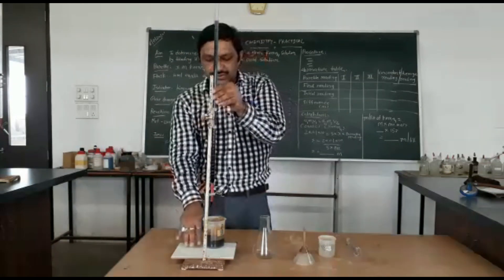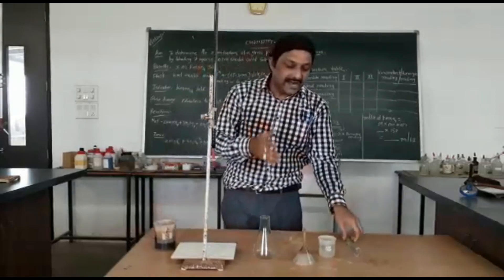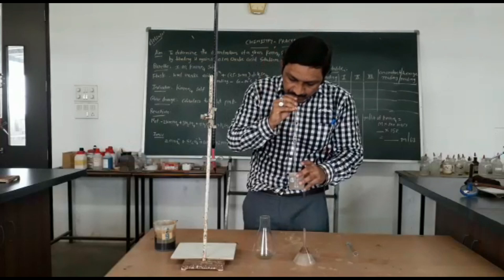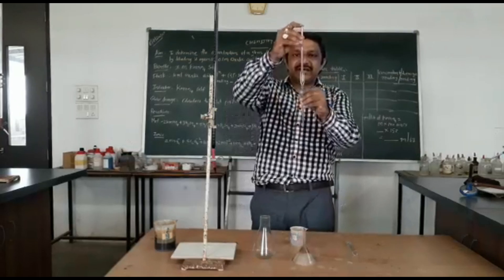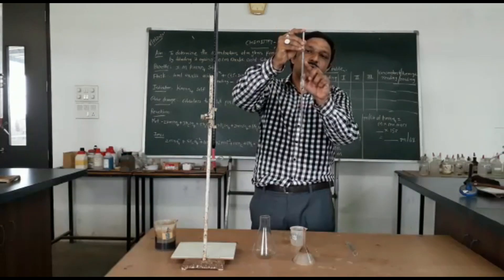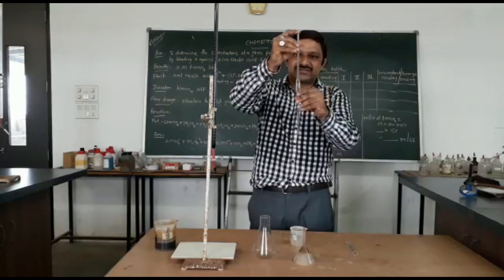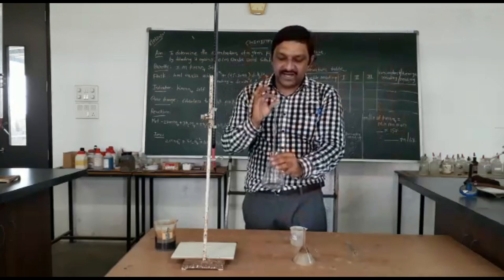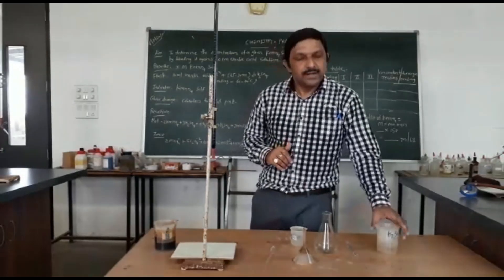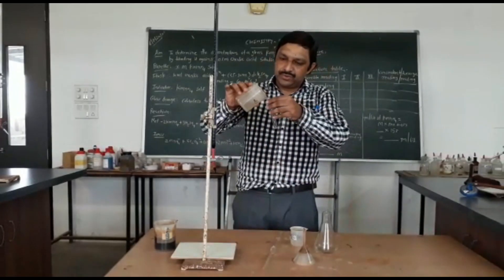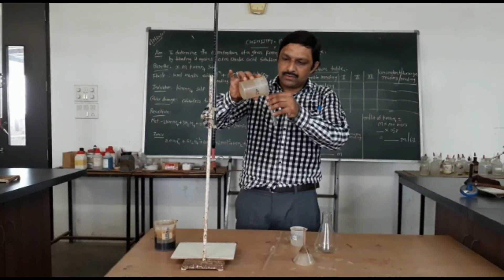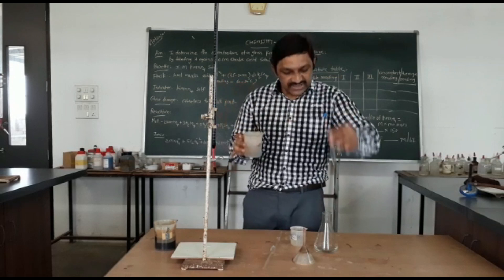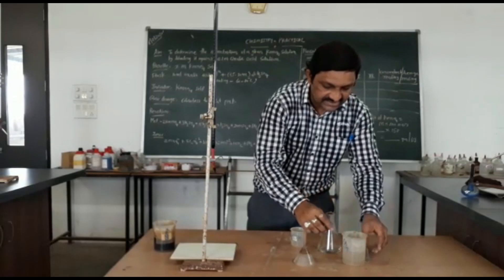Now add 10 ml of oxalic acid solution into your conical flask using a pipette. Take the lower meniscus reading since oxalic acid is a colorless solution. Then add one and a half test tubes of dilute sulphuric acid into your conical flask.